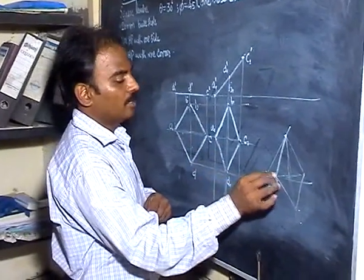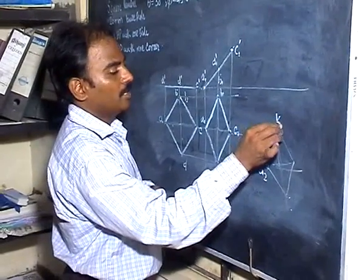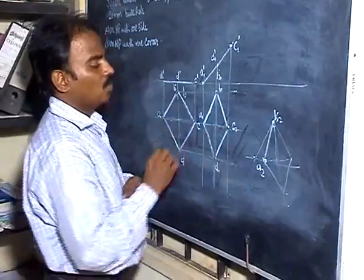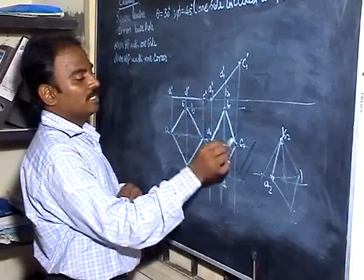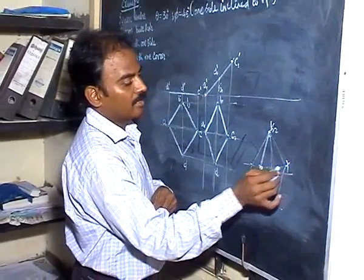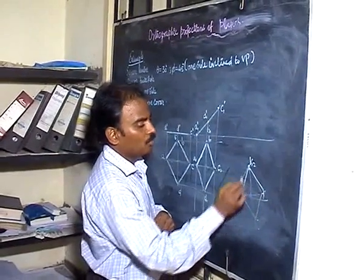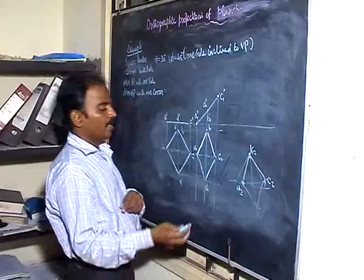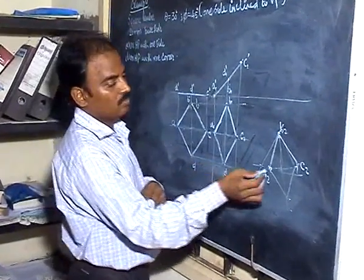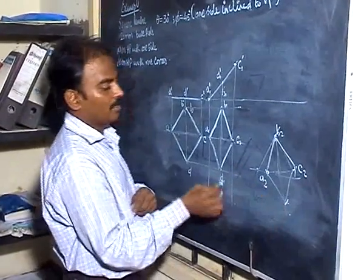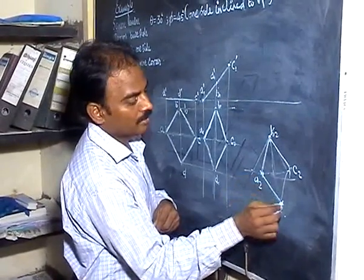Say for example you have these two points — let us say A2 and B2 are known. Take distance A1 to C1 and make one arc. Take D1 to C1 and make another arc. So obviously you will be getting A2, D2, C2. Similarly you can locate D2 by another arc from C2. So you will be getting this shape.